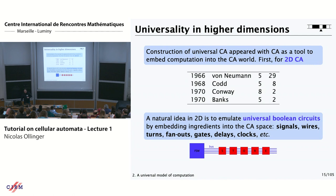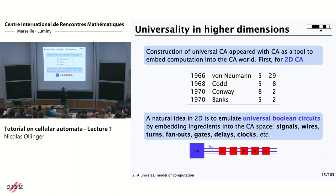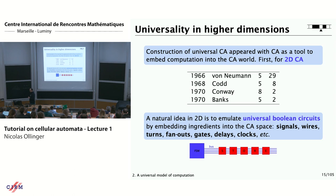How would you compute in a cellular space? The simplest way is to mimic what you do with circuits in electronics. You have some kind of signal, some wires that transport signals to the place you want. You need ways to move signals around, make them turn in space, have some fan-out to duplicate information — we are not doing quantum cellular automata here. You need some logical gates that implement a universal family of Boolean gates, some kind of delay to synchronize signals, and some kind of clock so that you don't do only monotone computation.